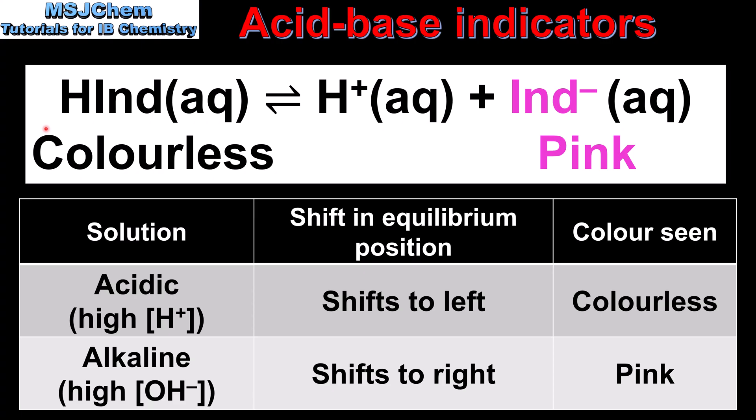For the Acid Base Indicator phenolphthalein, the unionized form represented as HIND is colorless, and the ionized form which is the conjugate base, represented in the equation as IND-, is pink. So to be an Acid Base Indicator, the unionized form and the ionized form — or the weak acid and its conjugate base — must have different colors in solution.